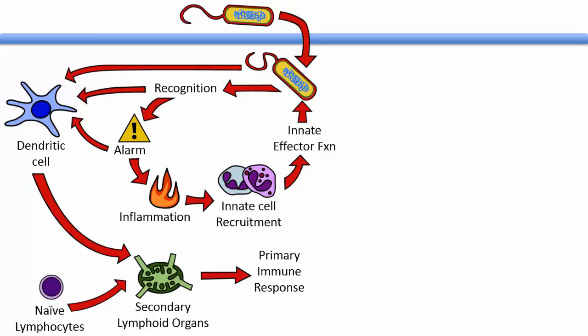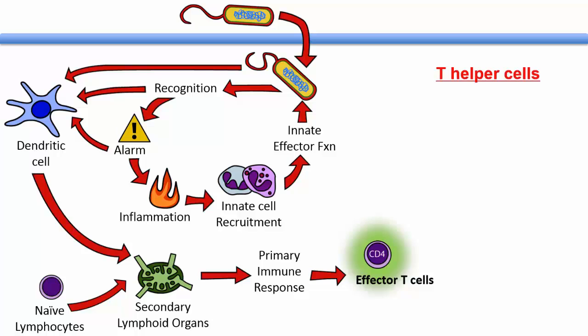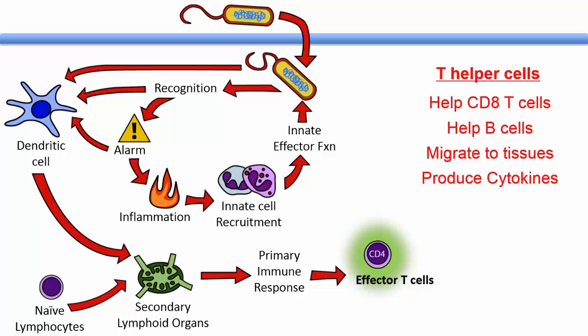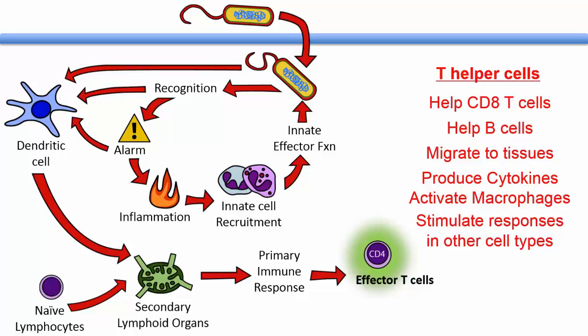Typically, a primary immune response results in the activation and expansion of three cell types. The first is effector CD4 cells or helper T cells. These cells perform a number of different functions: they provide help to CD8 cells, they help B cells, they migrate to tissues, they produce cytokines, and they activate macrophages. They also stimulate immune responses in other cell types.